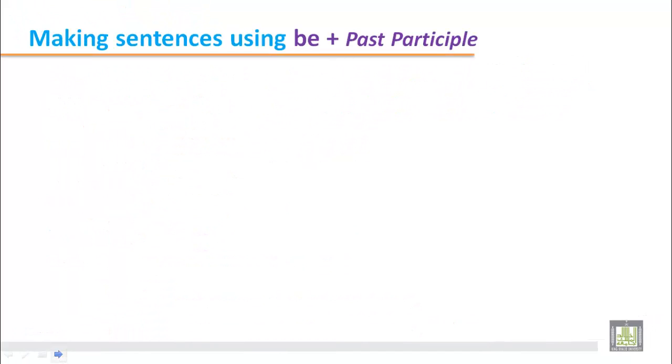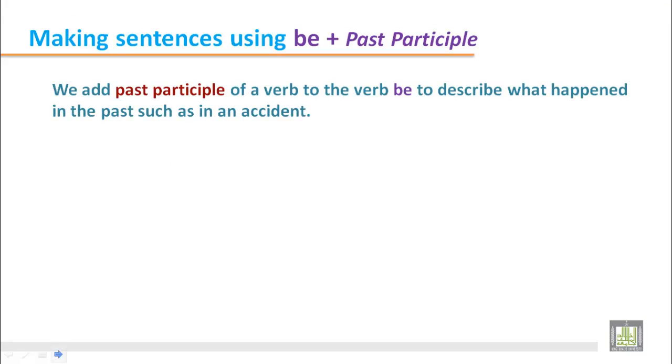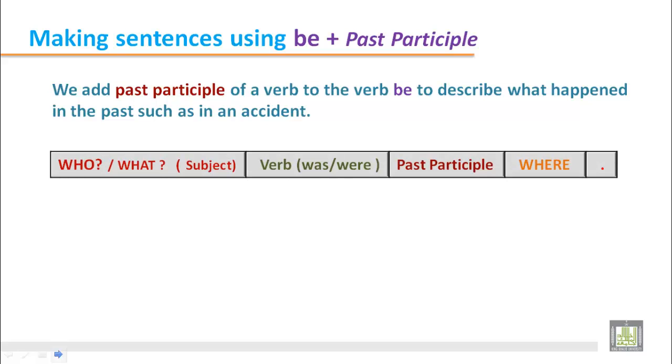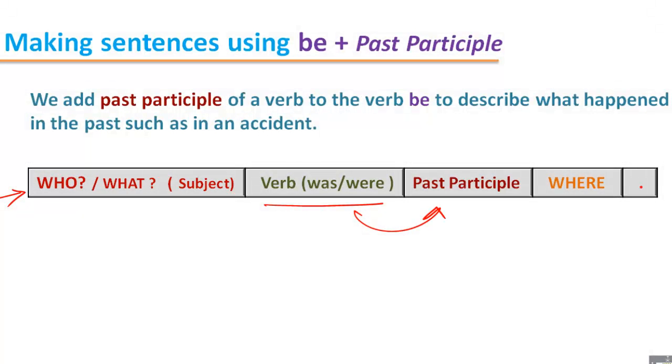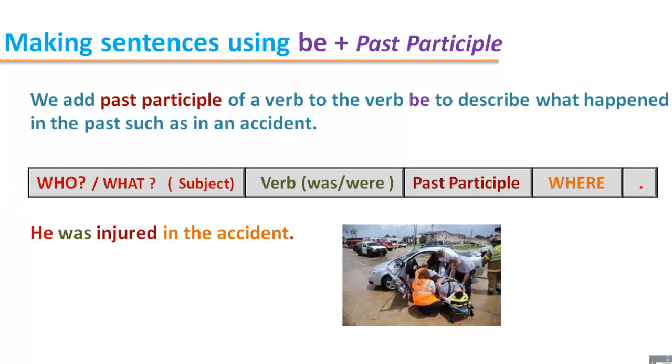Making sentences using BE with past participle. We add past participle of a verb to the verb BE to describe what happened in the past, such as in an accident. This structure shows: after the subject, whether singular or plural, we use the verb was or were, then we use the past participle of the main verb. Let us see the examples. This is the picture of an accident. This man—he was injured in the accident. Here we find, after the subject, as it is singular, we used was, the BE verb, and then the past participle of the verb.